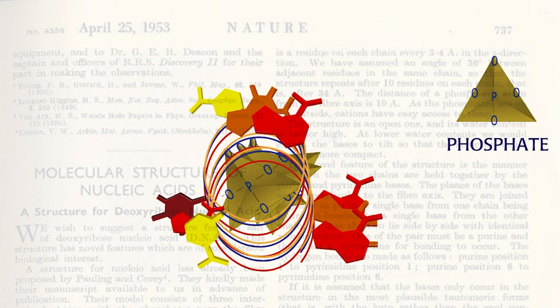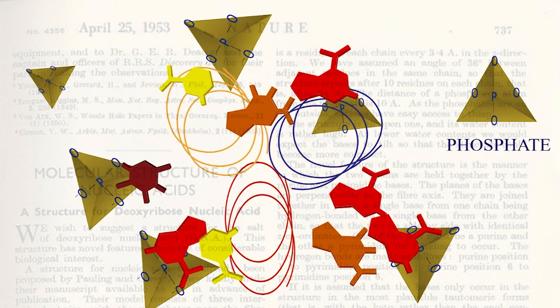Pauling had forgotten the negative charges of the oxygen atoms in each phosphate group. Facing towards the middle and stacked on top of each other, these charges would repel one another, making it impossible for the molecule to hold together. Almost unbelievably, the man who had written the book on chemical bonding got it wrong.